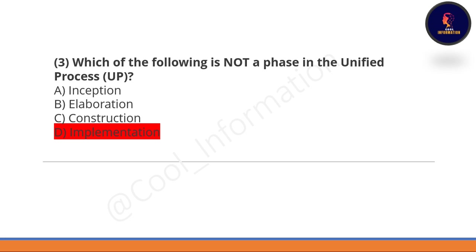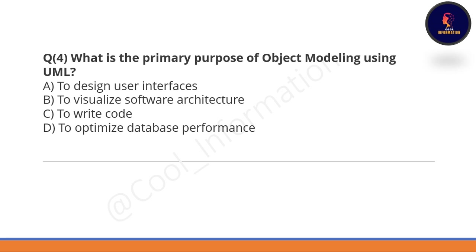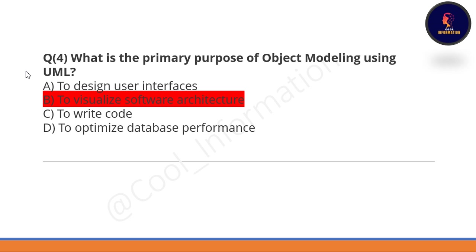Next question: what is the primary purpose of object modeling using UML? Option B is correct — to visualize software architecture is the primary purpose of object modeling using UML.